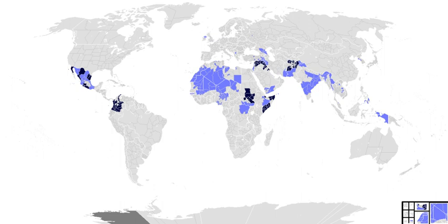Electronic warfare refers to mainly non-violent practices used chiefly to support other areas of warfare. The term was originally coined to encompass the interception and decoding of enemy radio communications, and the communications technologies and cryptography methods used to counter such interception, as well as jamming, radio stealth, and other related areas. Over the later years of the 20th century and early years of the 21st century, this has expanded to cover a wide range of areas, including the use of, detection of, and avoidance of detection by radar and sonar systems, computer hacking, etc.